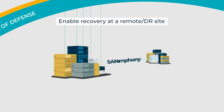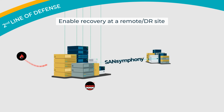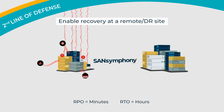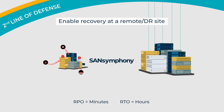To mitigate the impact of regional or site-wide outages, maintain an asynchronous copy of your data at a secondary site. When the primary site fails, you can failover to the remote site.